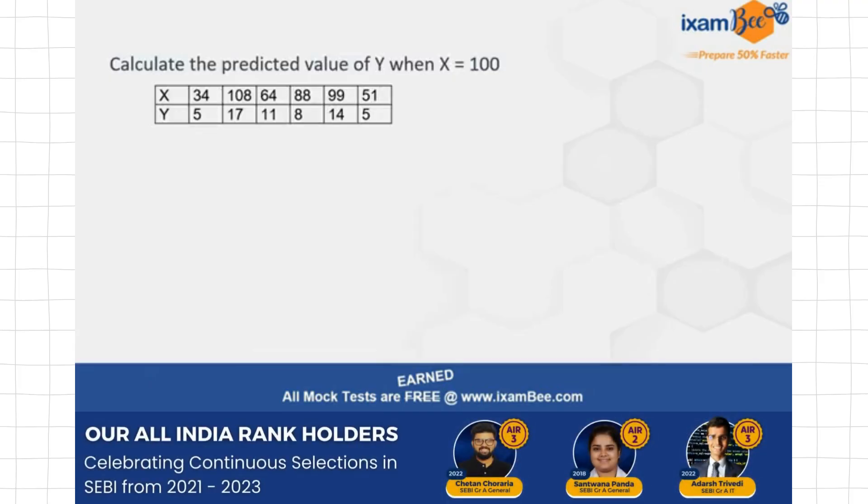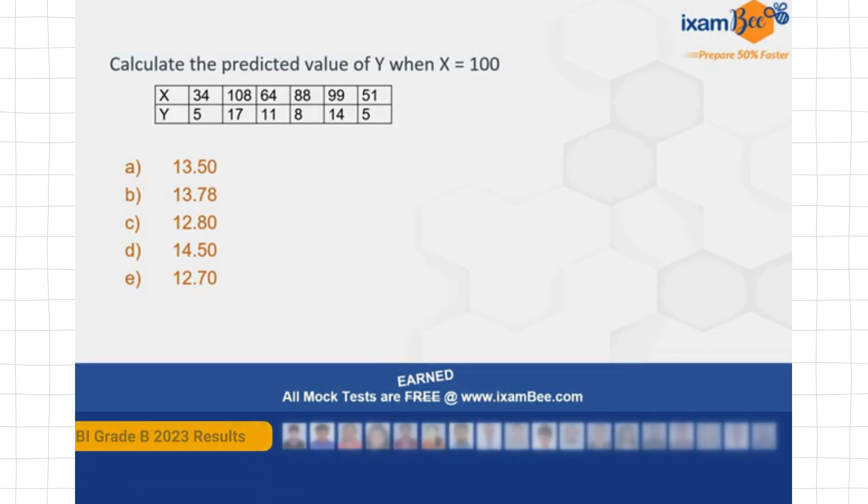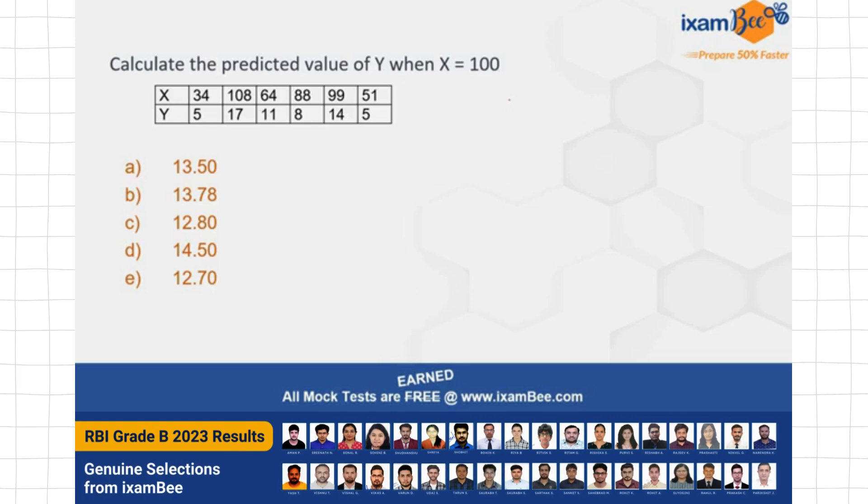The question is that you have to calculate the predicted value of y when x is 100. Pretty straightforward question but a lengthy one. You are given the values of x and y and based on these values, you have to calculate what would be the predicted value of y when x is 100. The options are also given to you here. So this is a straightforward question just that it will require some time in calculation. If you know how to do it, just pause the video right away and solve it yourself. Otherwise, if you don't know, let's proceed along with me.